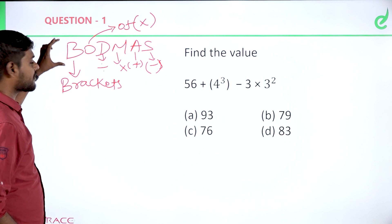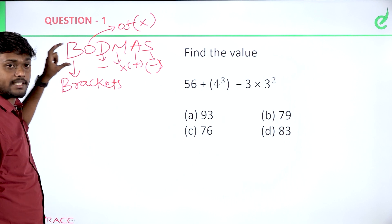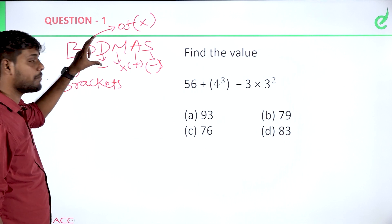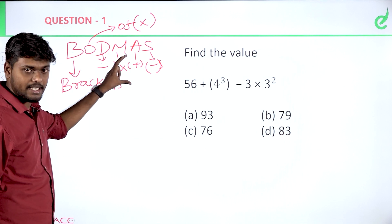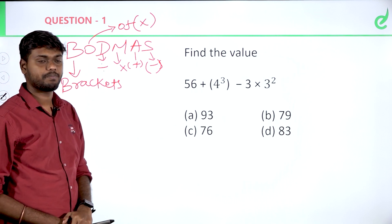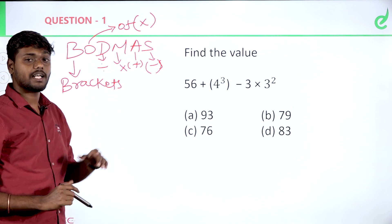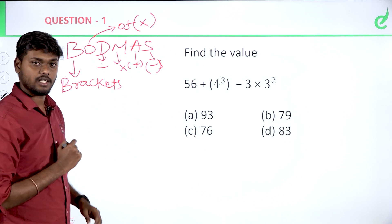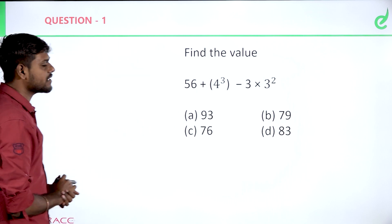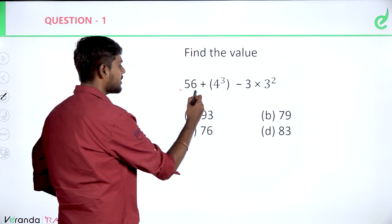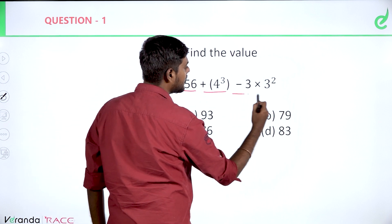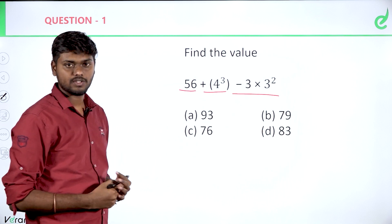Now, the first preference is Brackets, next Off, next Division, next Multiplication, then Addition, then Subtraction. Understand? Here is the equation — how do I apply it? The question is: 56 plus 4 cubed minus 3 into 3 squared.